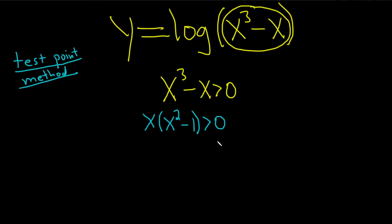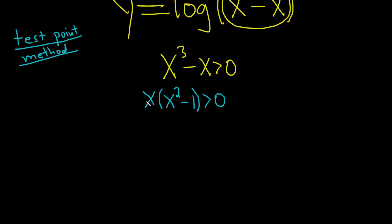And we can actually do better than this, right? We can actually factor this again. This second factor here is the difference of squares. So this is x, parentheses, x minus one, x plus one. And that's greater than zero. Okay, so we've accomplished step one now in our test point method, which is to have a single term on one side and zero on the other.